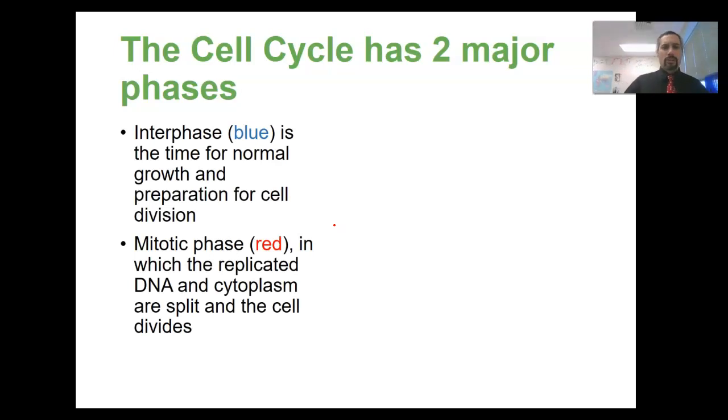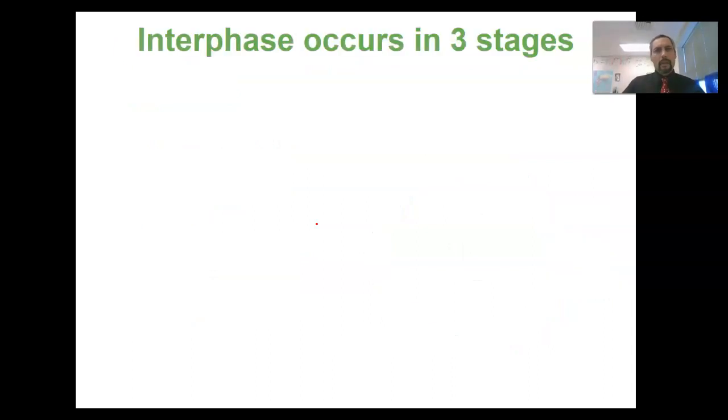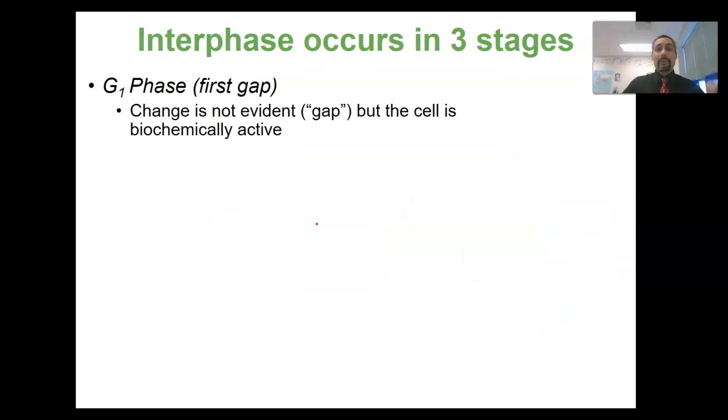And the mitotic phase, which is our red here. And this mitotic phase is in which DNA gets replicated, cytoplasm is split, and the cell actually divides and creates those two daughter cells.